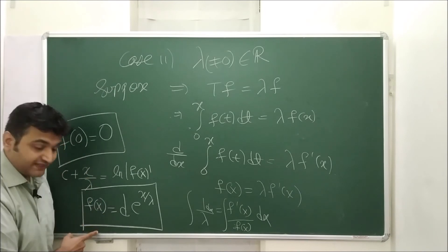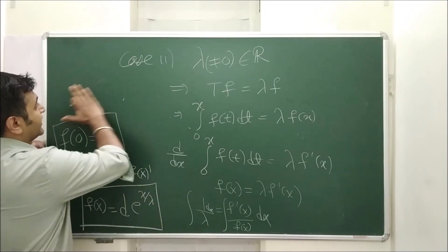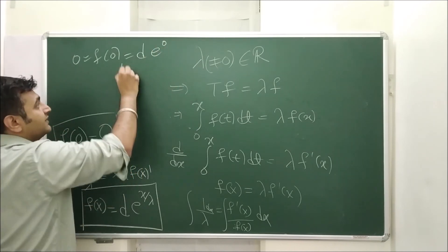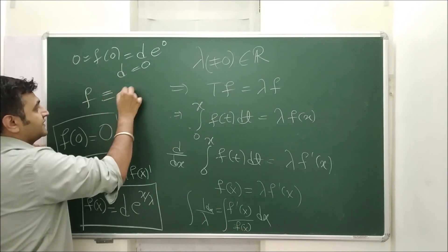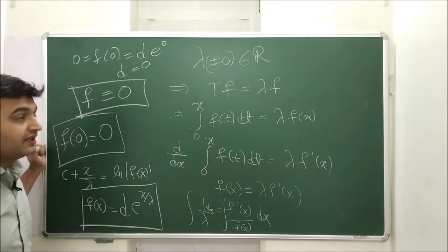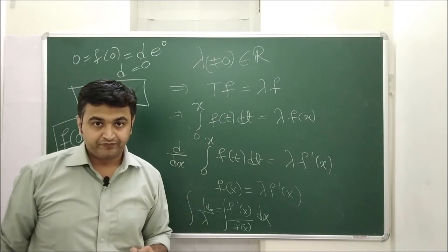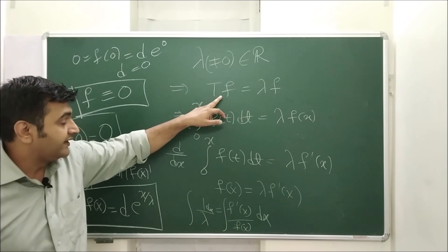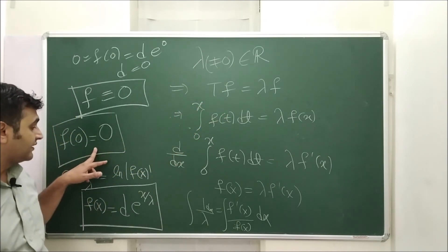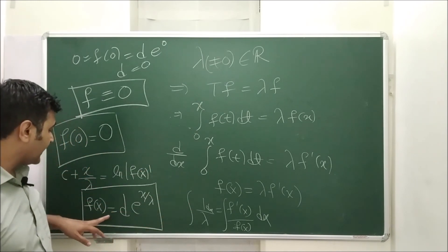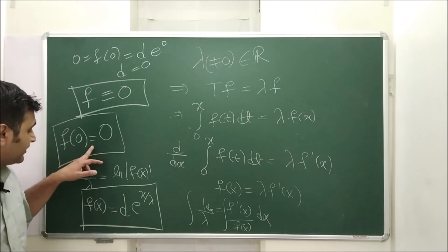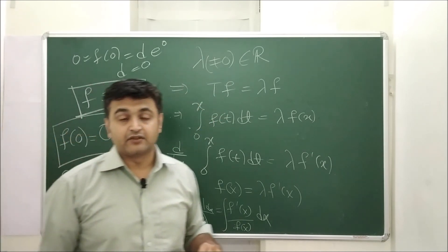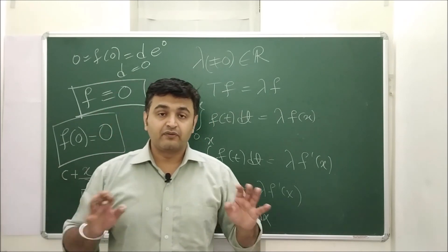But what is f of 0? f of 0 is given to be 0. So when I replace x by 0 over here where should I write? Let me write here. So this is 0 is equal to f of 0 is equal to d into e raised to 0 which is 1. So this implies your d is 0 and this implies your f is identically 0 which is a contradiction because our f is an eigenvector so it has to be non-zero. So if lambda is non-zero real number which is an eigenvalue therefore for that eigenvalue we will have an eigenvector and then using FTC fundamental theorem of calculus and using the fact that lambda is non-zero and f of 0 is 0 we get that our function has to be a multiple of exponential function. But then again from here we get that that function has to be a 0 function. It does not have any other choice. And then which contradicts to the fact that f is an eigenvector. Therefore for this integral operator it does not have any eigenvalue.